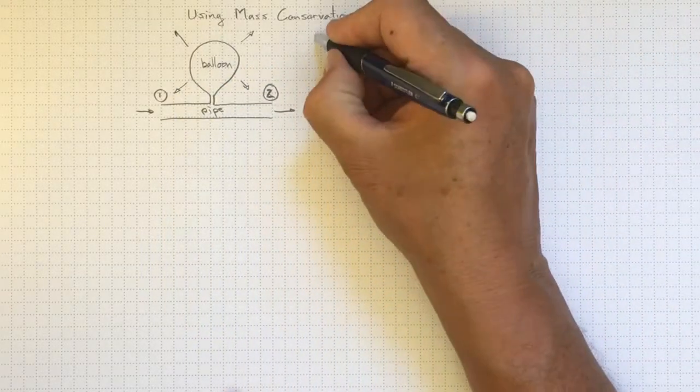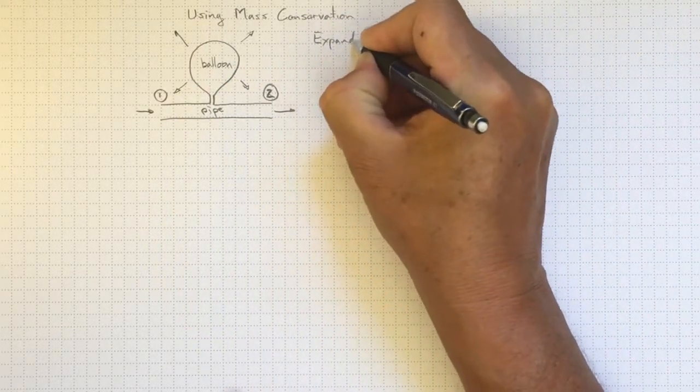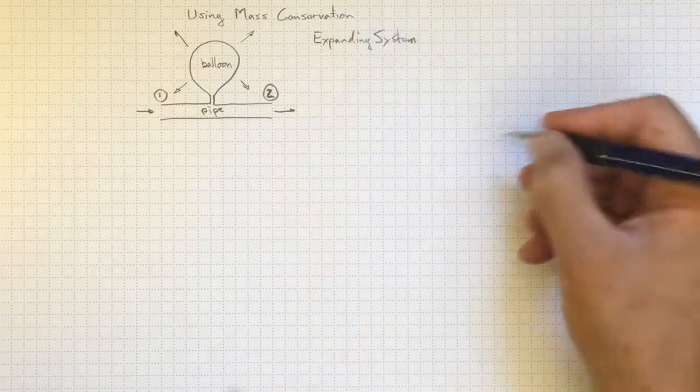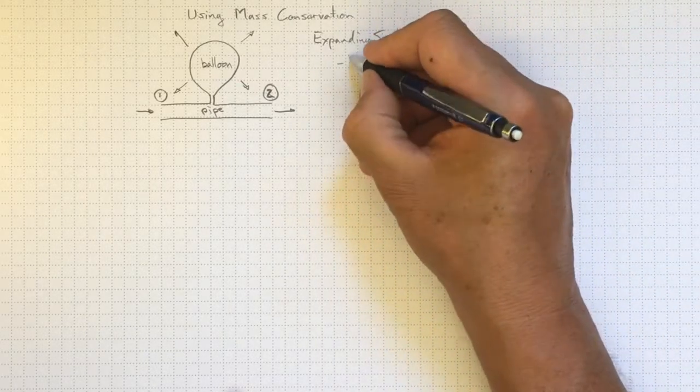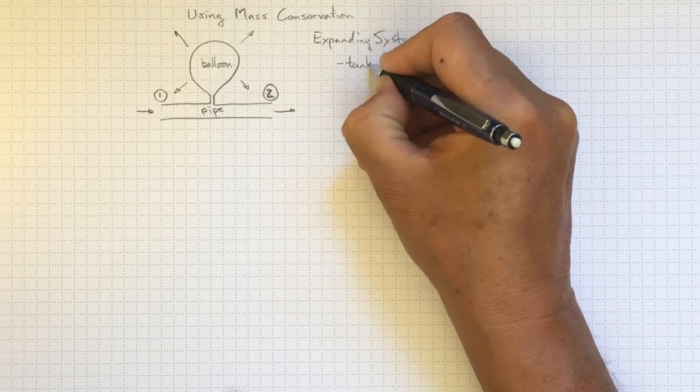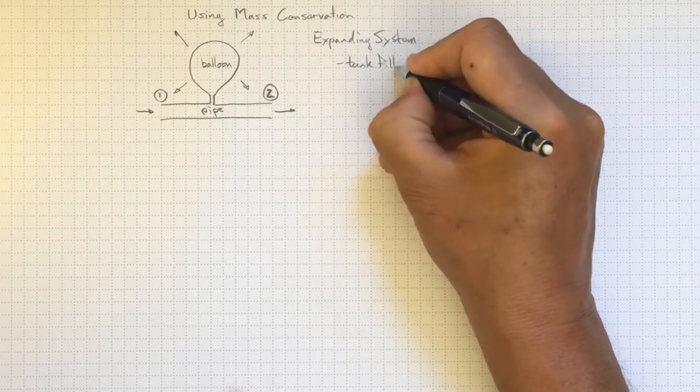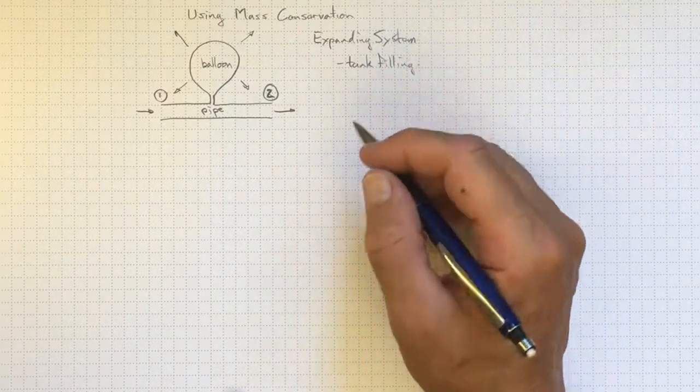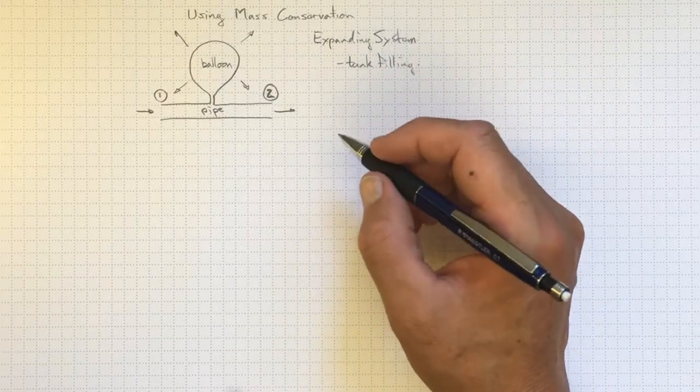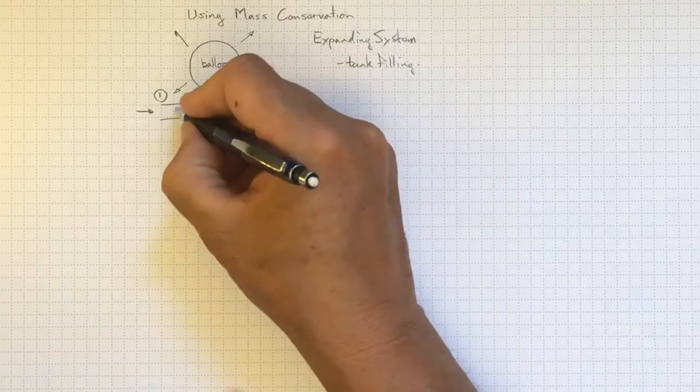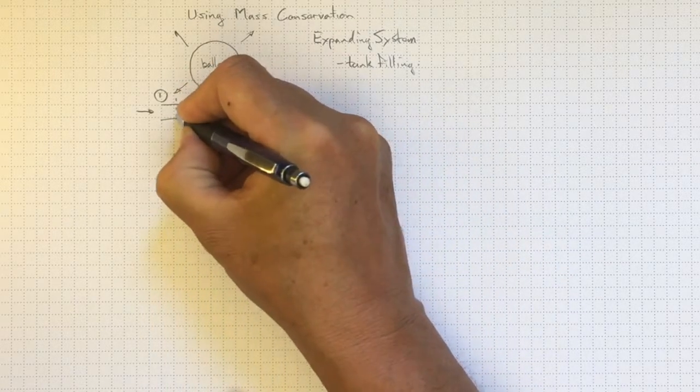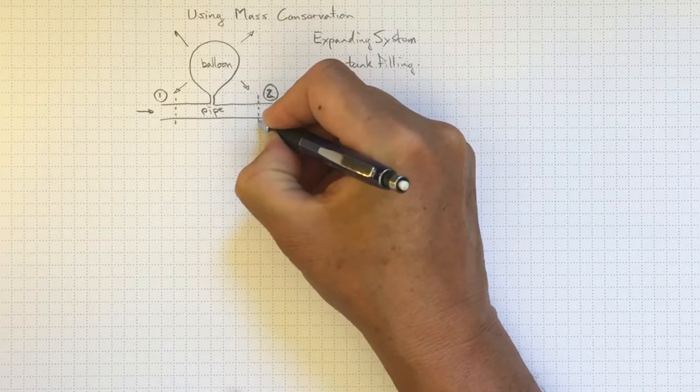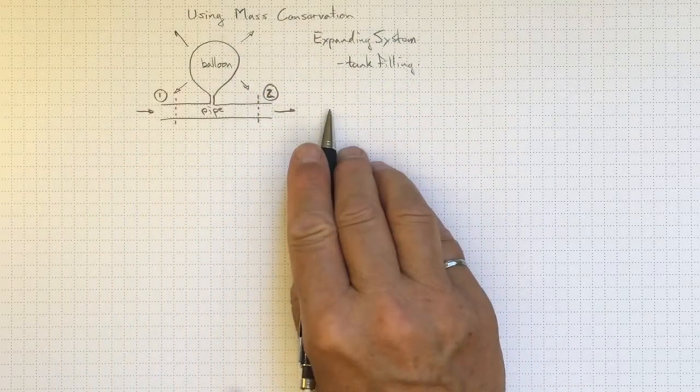We'd like to apply conservation of mass to figure out how much that balloon is going to expand. This could be similar to a problem where you have a tank that's filling as well. The key is to draw our control volume in a way that makes it easy for us to formulate the problem. So let's make sure that our control volume boundaries are perpendicular to the flow direction going through the pipe. That makes our lives easier.